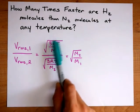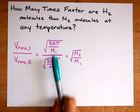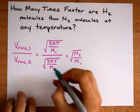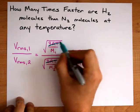We can use the root mean square speed formula to get that ratio, and what you might notice is that, as long as it's at the same temperature, the 3RTs cancel out.